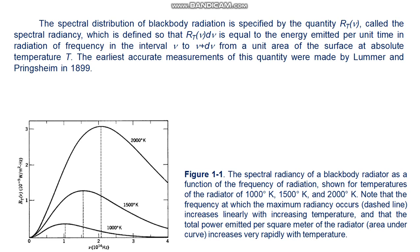Distribution functions, of which spectral radiancy is an example, are very common in physics. For example, the Maxwellian speed distribution function tells us how the molecules in a gas at a fixed pressure and temperature are distributed according to their speed.